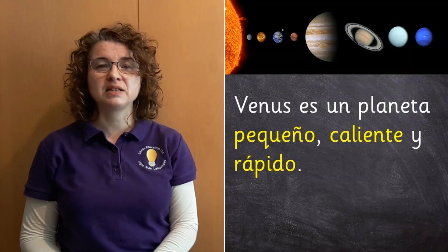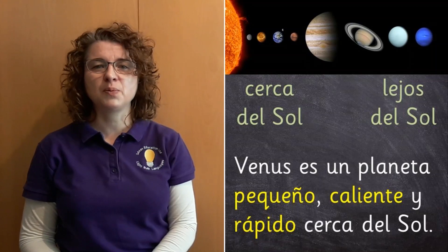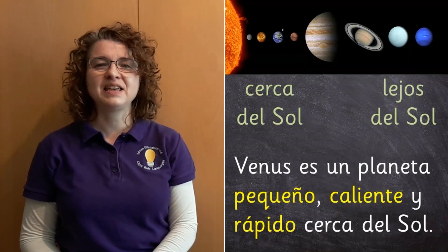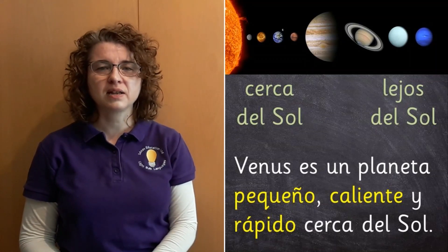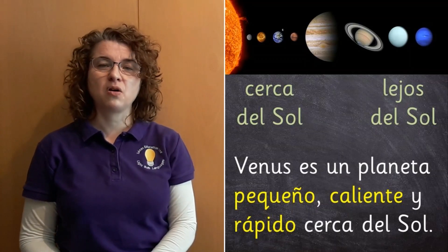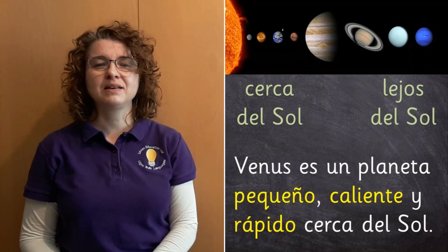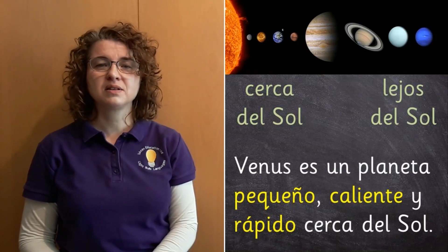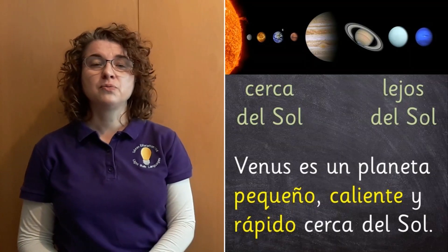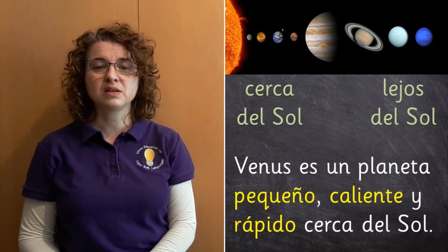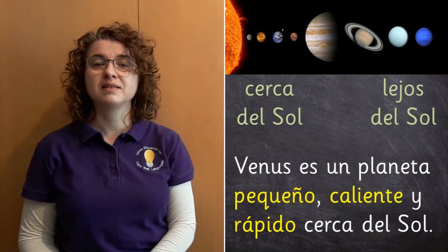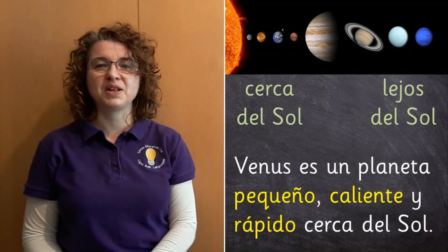There's something else that we could add as well. We could say how near to the sun a planet is, and we could say how far from the sun a planet is. If we want to say near the sun, we say cerca del sol. Have a go at that one. Cerca del sol. If a planet is far away from the sun, then we say lejos del sol. Lejos del sol. So, if we were still talking about Venus, we could add one of those onto the end of our sentence: Venus es un planeta pequeño, caliente, y rápido, cerca del sol. And we've described that planet pretty thoroughly now.